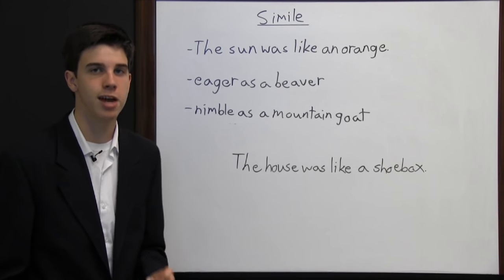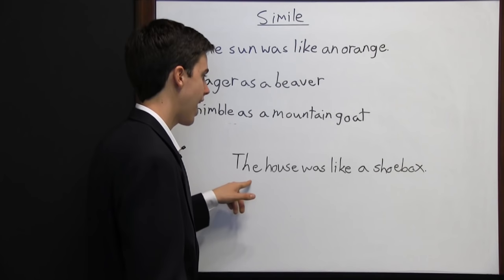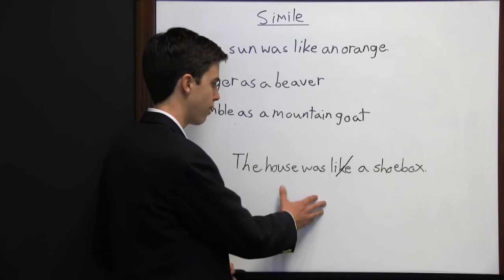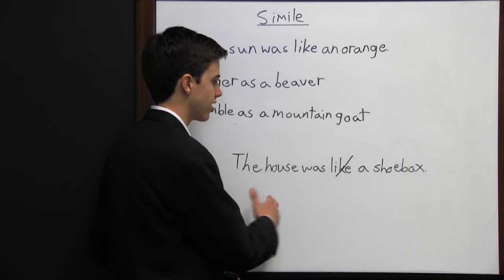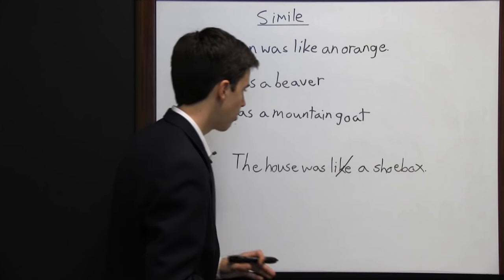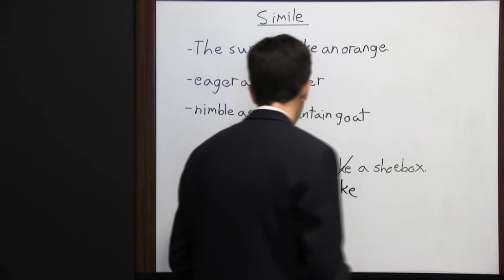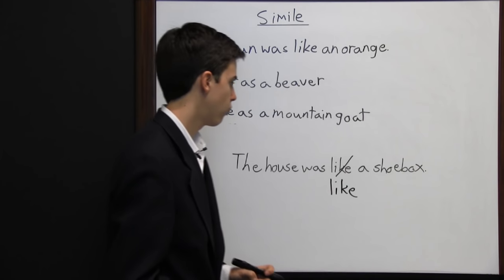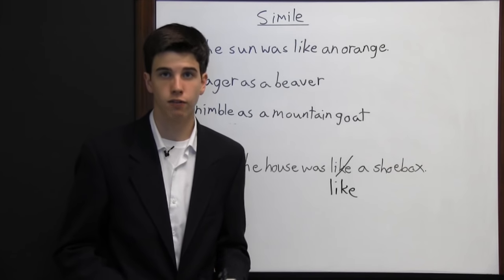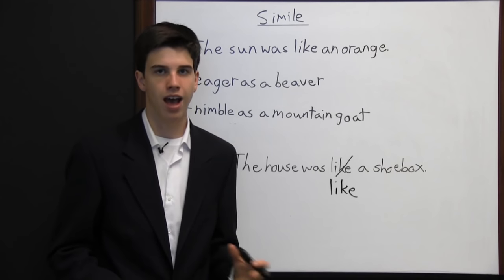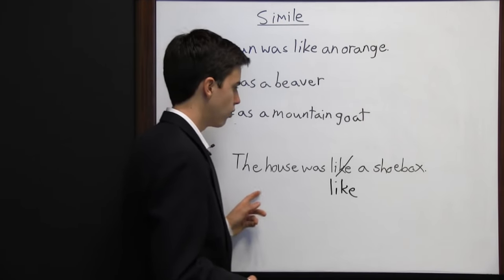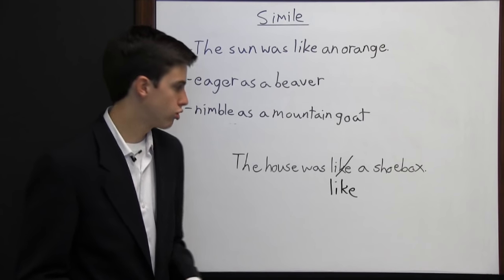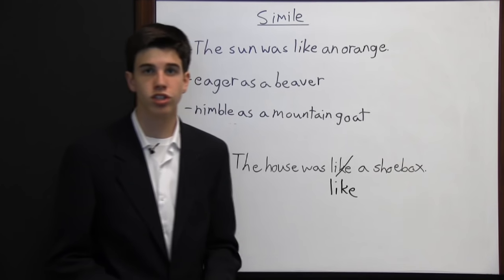Similes differ from metaphors. The simile "the house was like a shoebox" — in a metaphor, "like" would be removed and it would just say "the house was a shoebox." In a metaphor, the author never acknowledges the two things are different. In a simile, "like" stays there, and the author acknowledges they're not the same, just similar. The difference comes down to the emotion or tone the author wants to evoke. The purpose of both is to get the reader to think of one thing in terms of another.